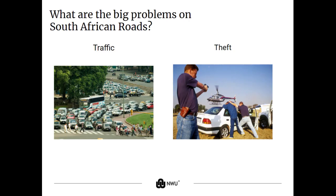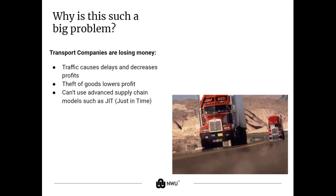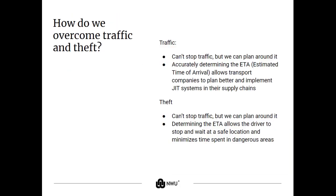Now what are the big problems on African roads? The main problems are traffic and theft, specifically on larger roads such as the one between Johannesburg and Durban, where there are gangs known for stealing from cargo trucks and where traffic gets insane around the harbour. The traffic and the theft cause a lot of loss for the transport companies in our country, while also ensuring that we don't use more advanced supply chain methods such as just-in-time, which can help increase revenue for these transport companies.